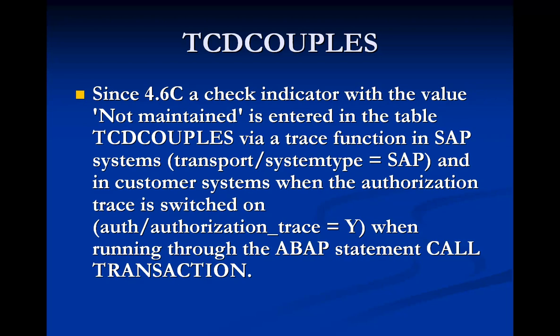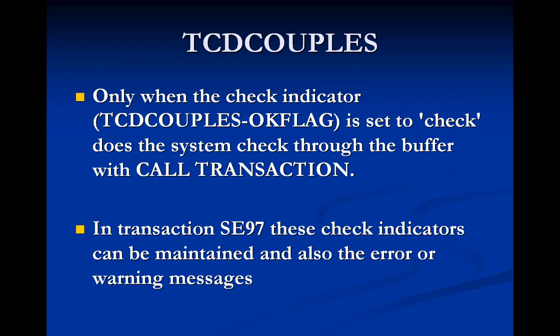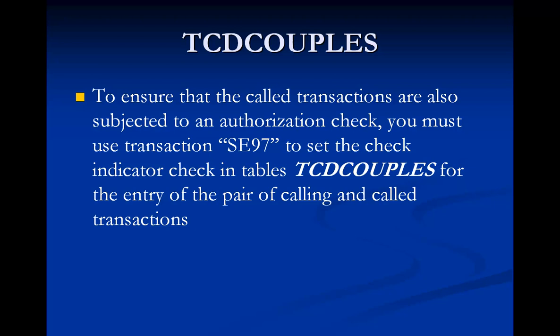This concept of TCD Couples was introduced in version 4.6c, where a check indicator in the table TCD Couples allows you to link a called transaction with a calling transaction. You can maintain those check indicators between calling transaction codes and called transactions using transaction code AC97. To ensure that called transactions are also subject to authorization checks, you must use AC97 to set the check indicators in table TCD Couples for the pair of calling and called transactions.